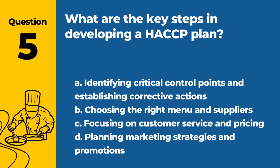Question 5. What are the key steps in developing a HACCP plan? A. Identifying critical control points and establishing corrective actions. B. Choosing the right menu and suppliers. C. Focusing on customer service and pricing. D. Planning marketing strategies and promotions. Answer: A. Identifying critical control points and establishing corrective actions. Developing a HACCP plan involves identifying critical control points and establishing corrective actions to mitigate risks.